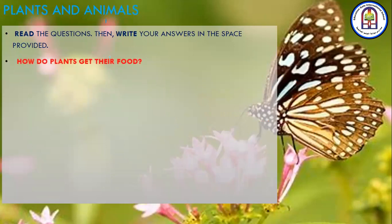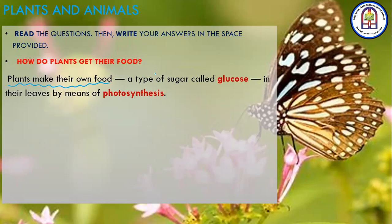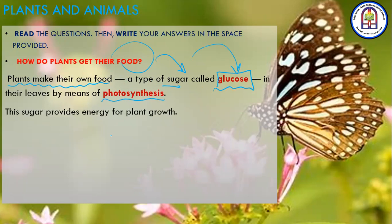How do plants get their food? Plants make their own food by the process of photosynthesis. This is a very important sentence. This food is a type of sugar called glucose. The sugar is the food that the plant makes during the process of photosynthesis in the leaves. This sugar provides energy for plant growth.